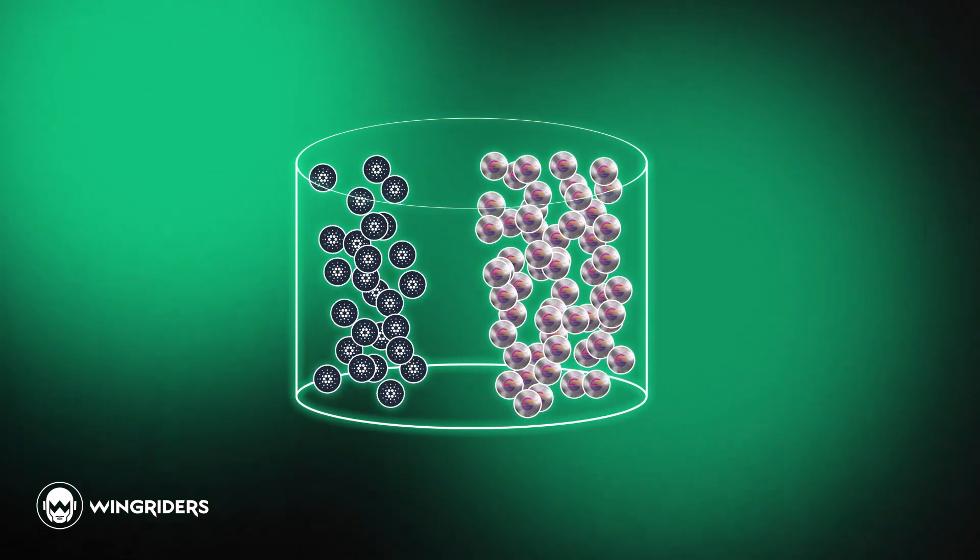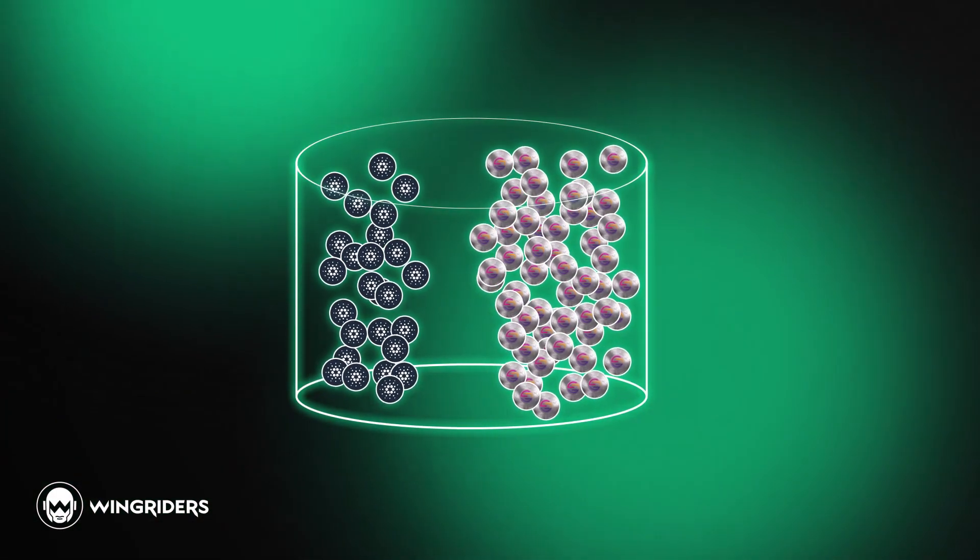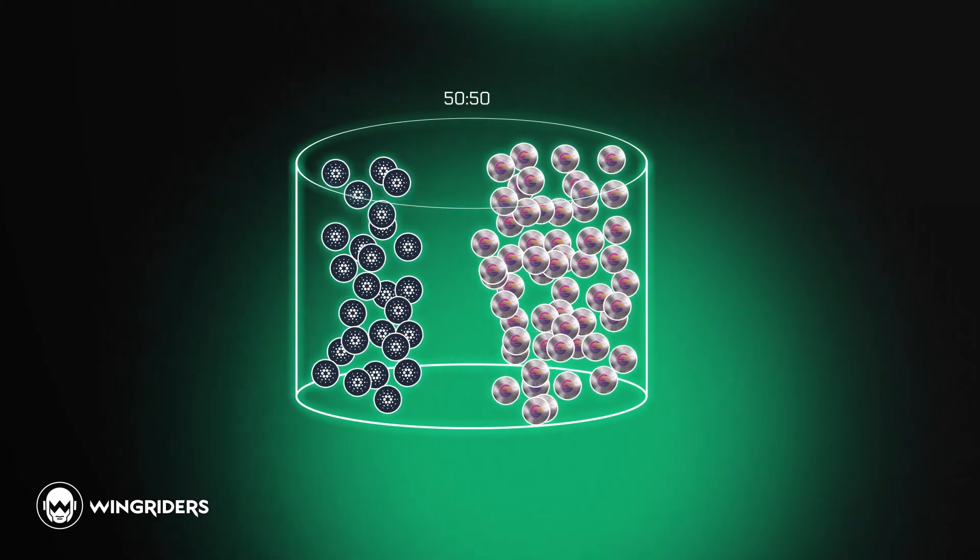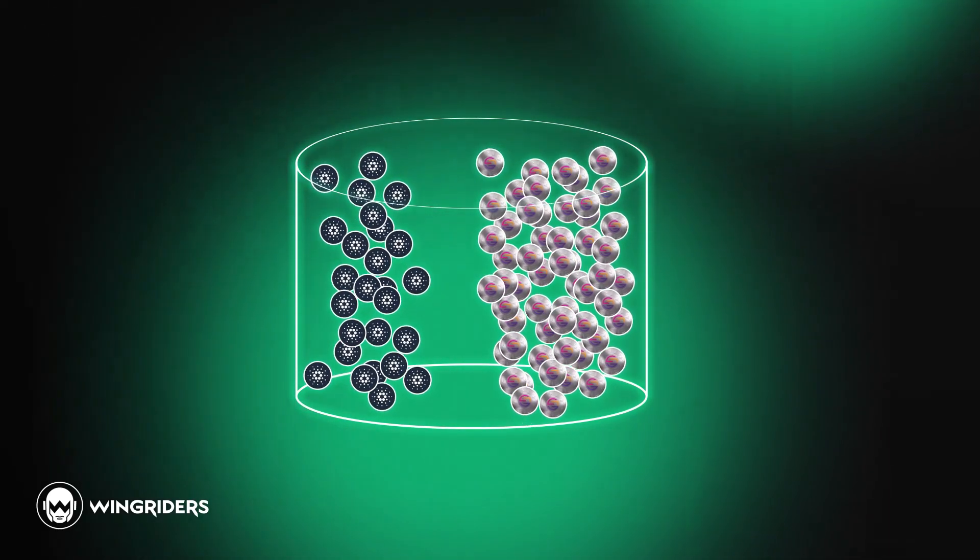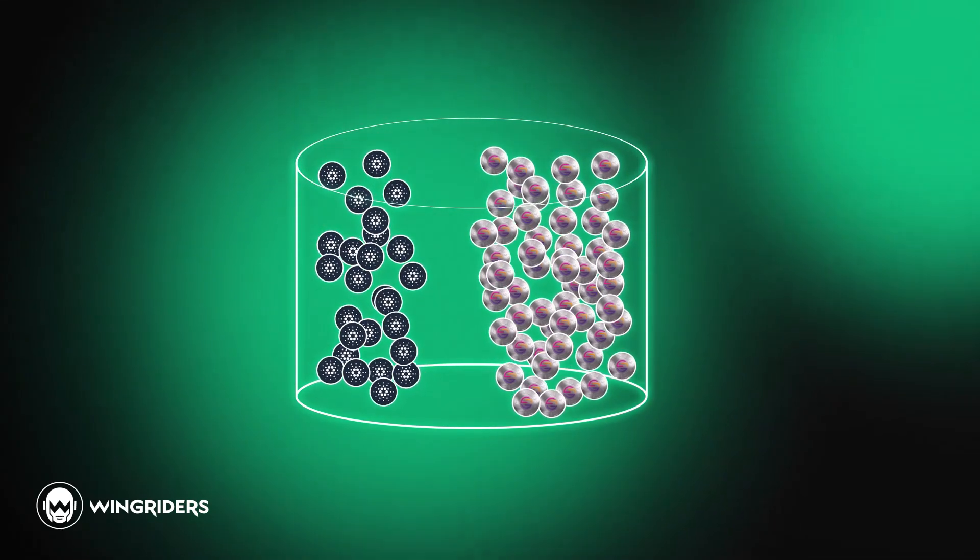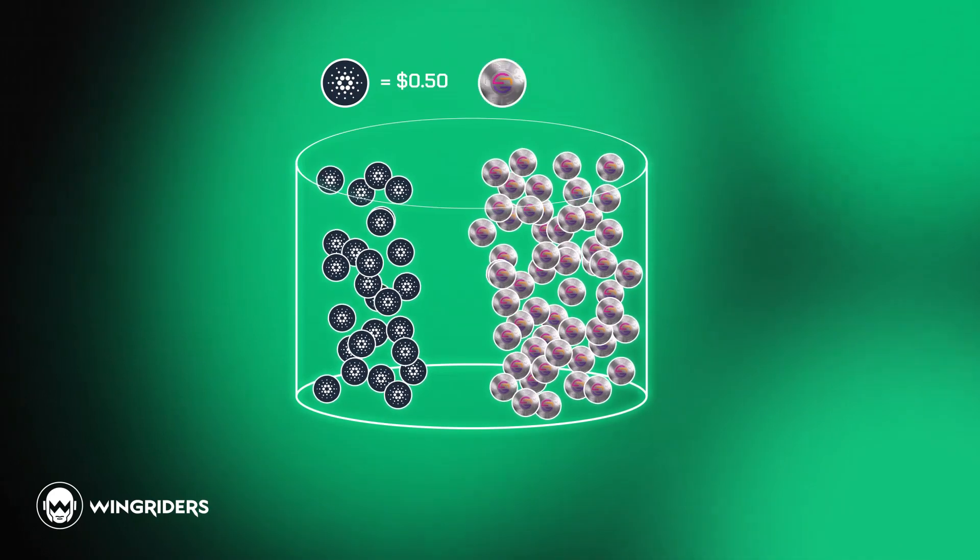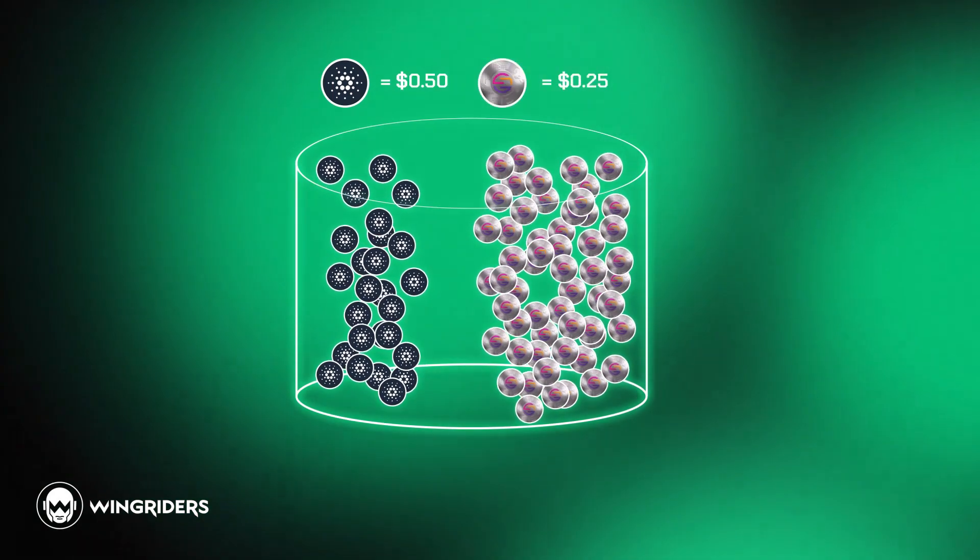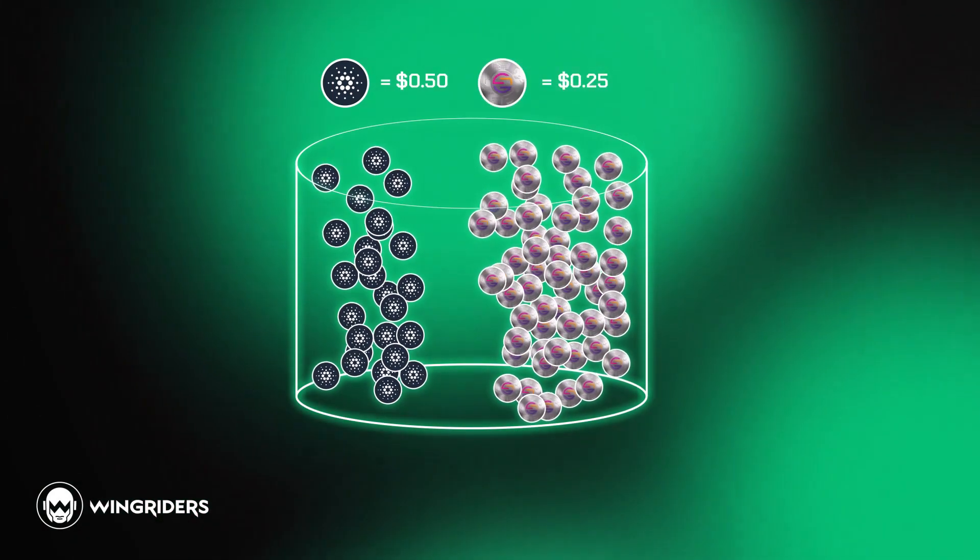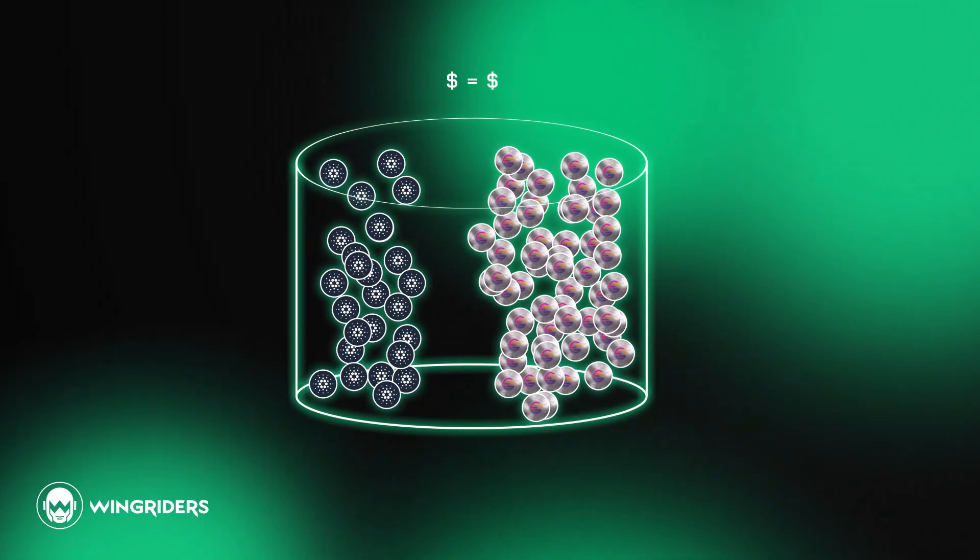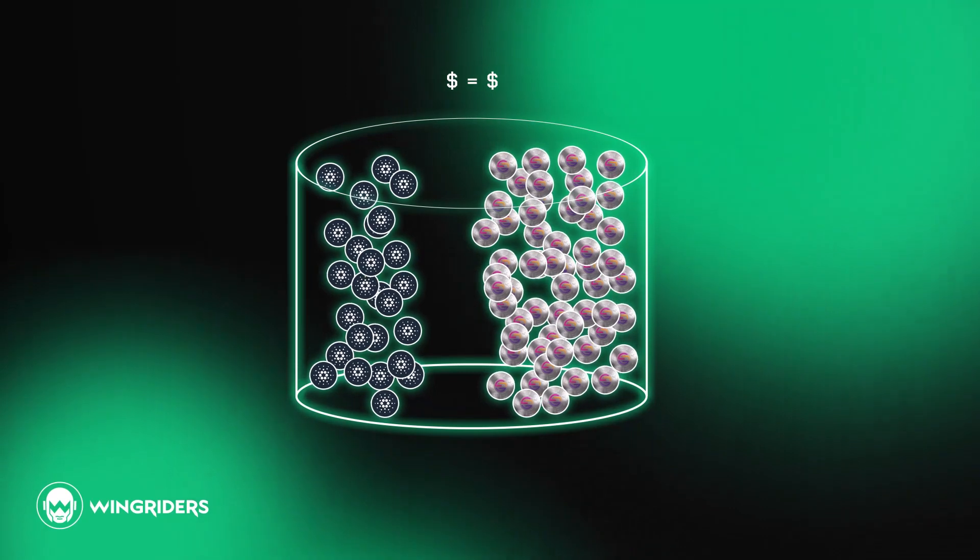Imagine there's a pool with ADA and WMT. Most liquidity pools require the assets to be in a 50-50 ratio of value. This means that if the value of one ADA is 50 cents and the value of WMT is one quarter, there has to be double the amount of WMT than ADA in the pool, so the dollar value of all ADA equals the dollar value of all WMT in the pool.